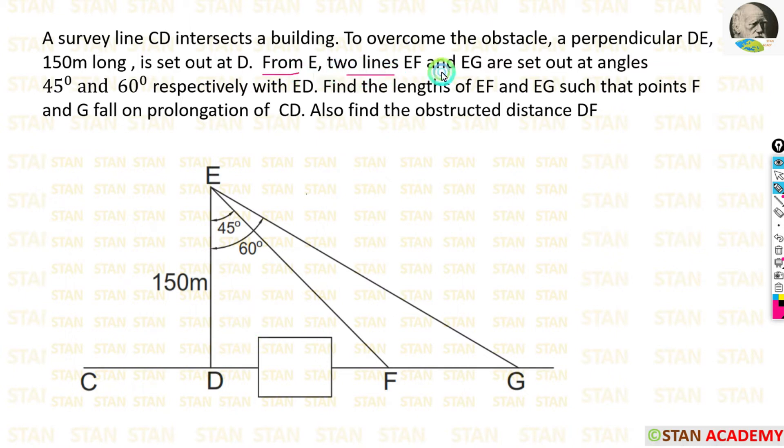From E, two lines EF and EG are set out at angles 45 degrees and 60 degrees respectively with ED. With respect to the line ED we are making two more lines: at 45 degrees from the point E and at 60 degrees from the point E. The first line is EF, it is made at 45 degrees, and the second line is EG, it is made at 60 degrees.